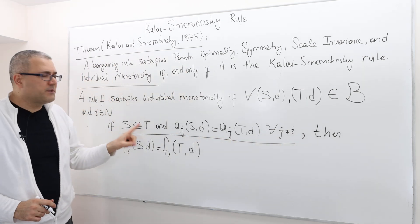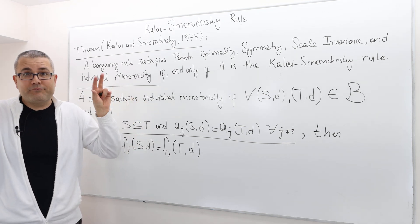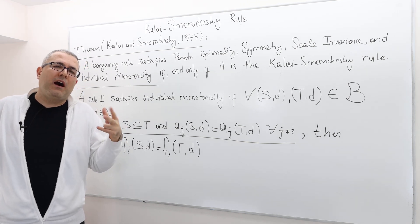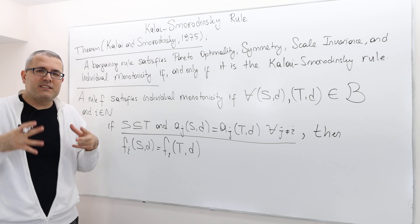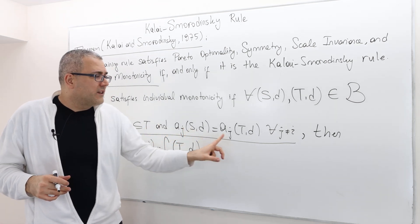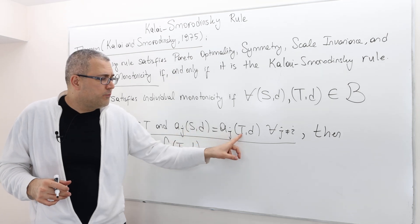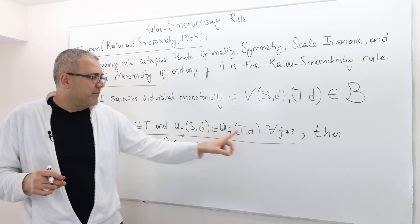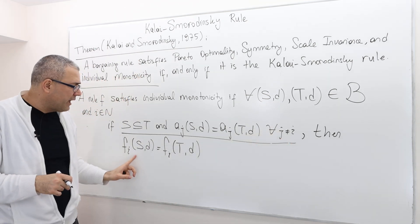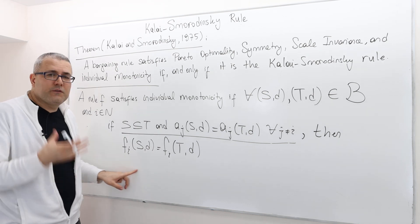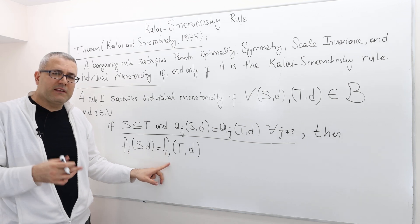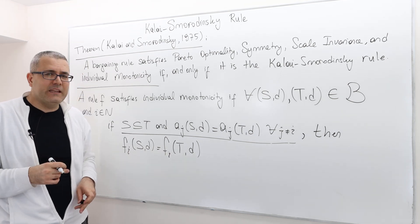If S is a subset of T, so T is a larger bargaining problem in a sense than S. T has a lot more possible alternatives than S. So in that sense it's larger. And aspiration point of all the players in these two bargaining problems are the same for every other players except I, then player I's outcome from this bargaining problem S must be the same as his outcome from the bargaining problem T.